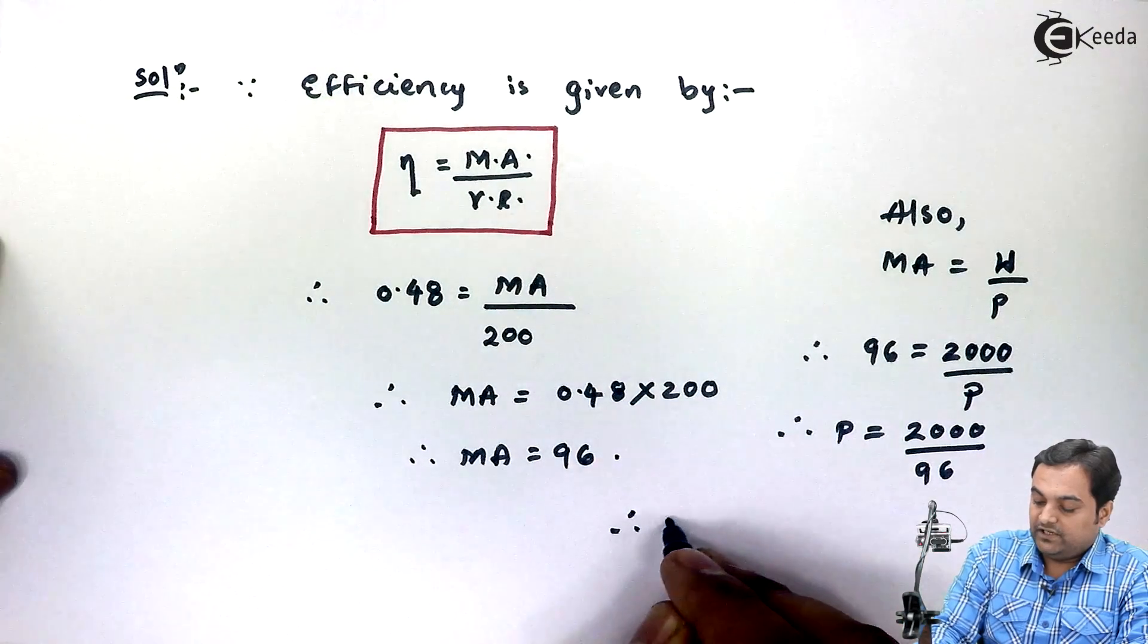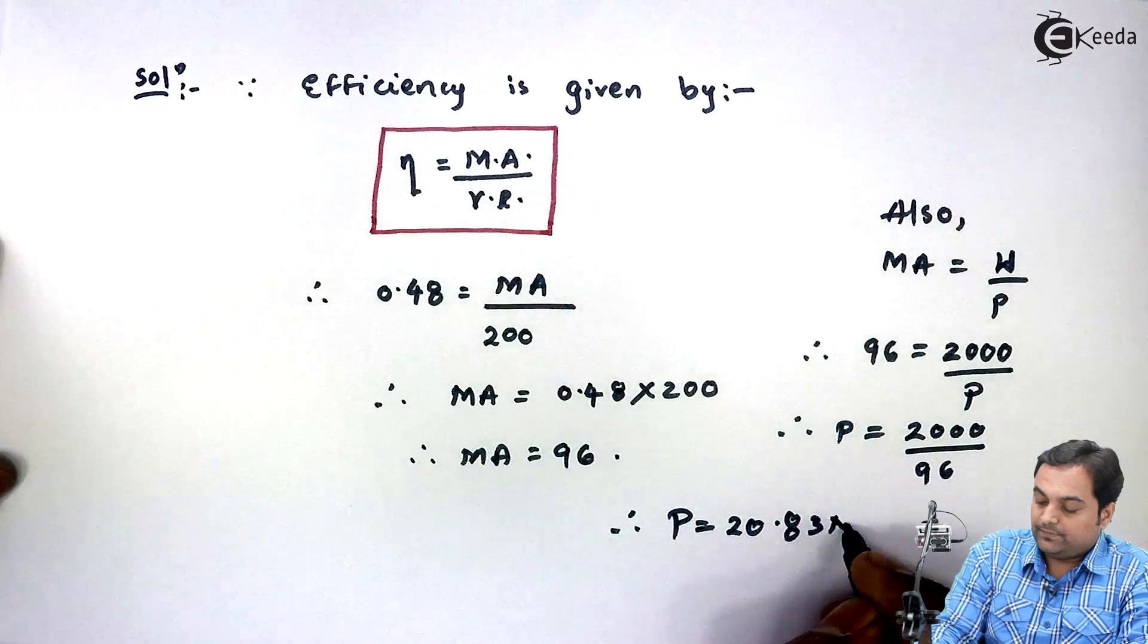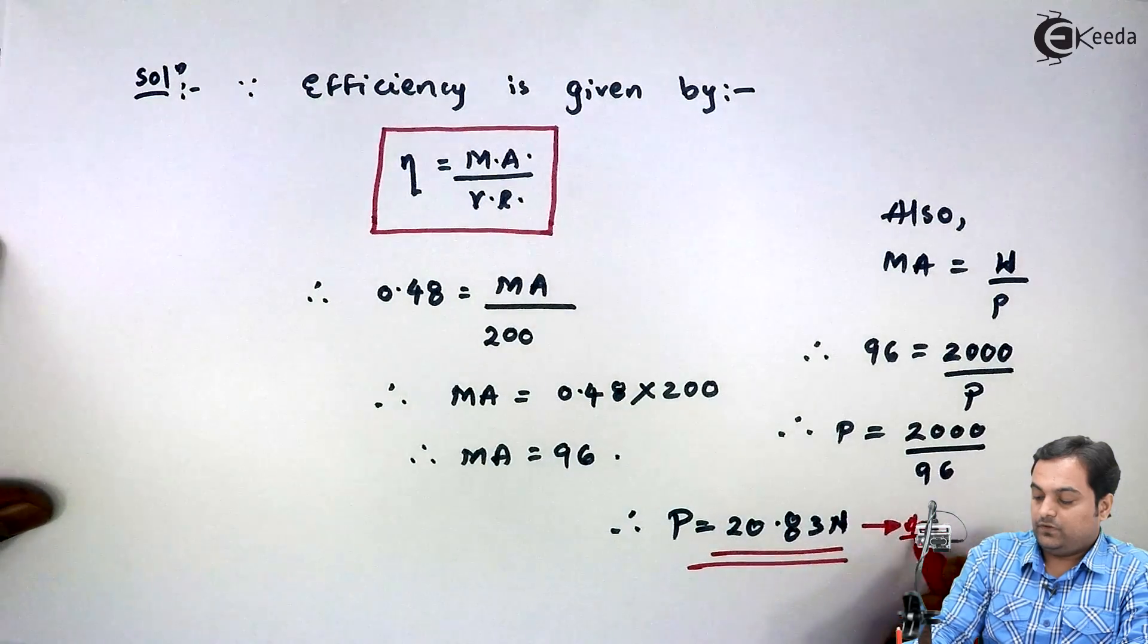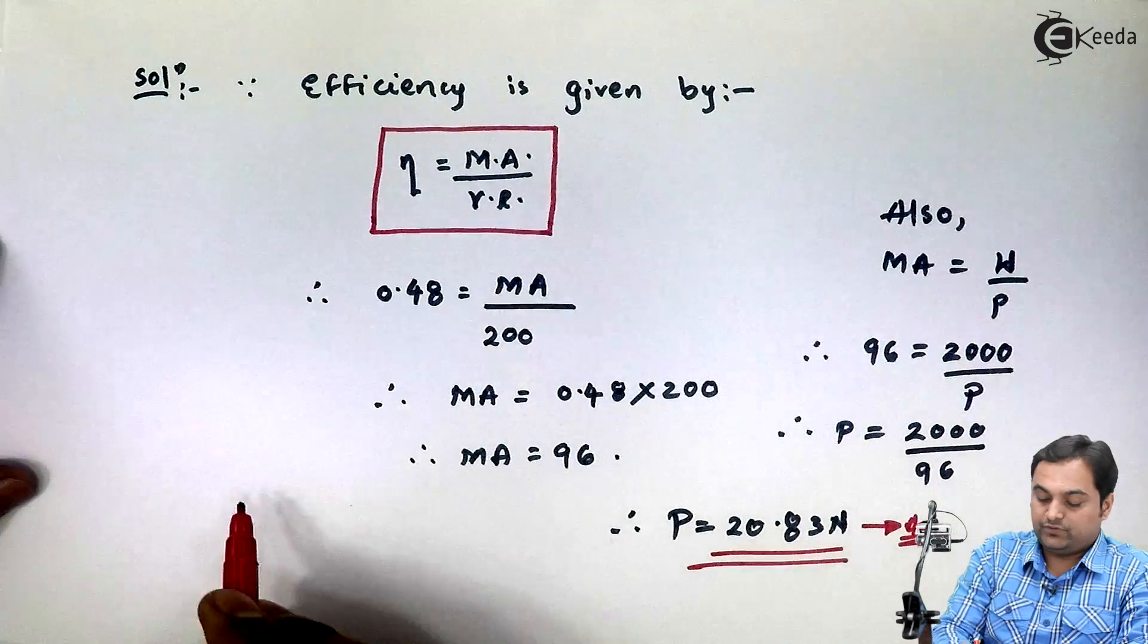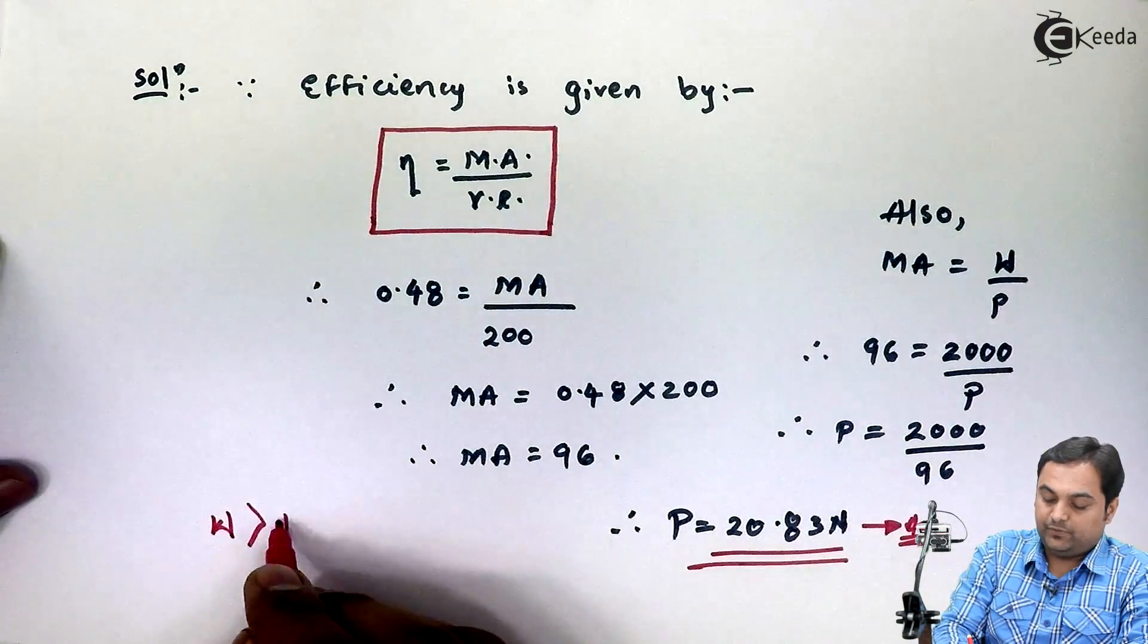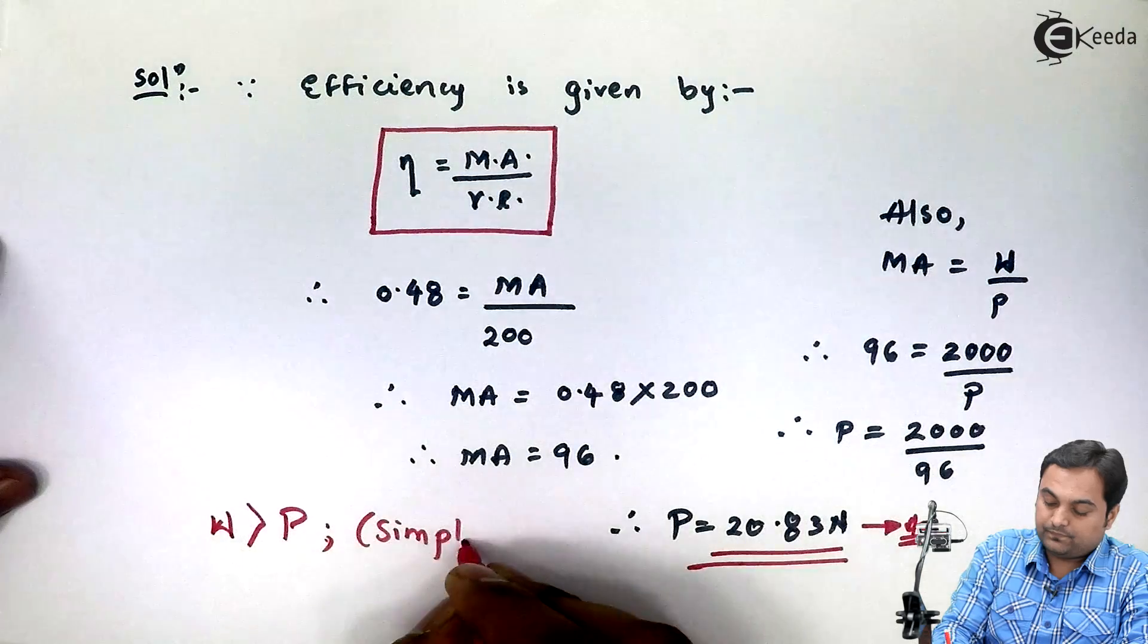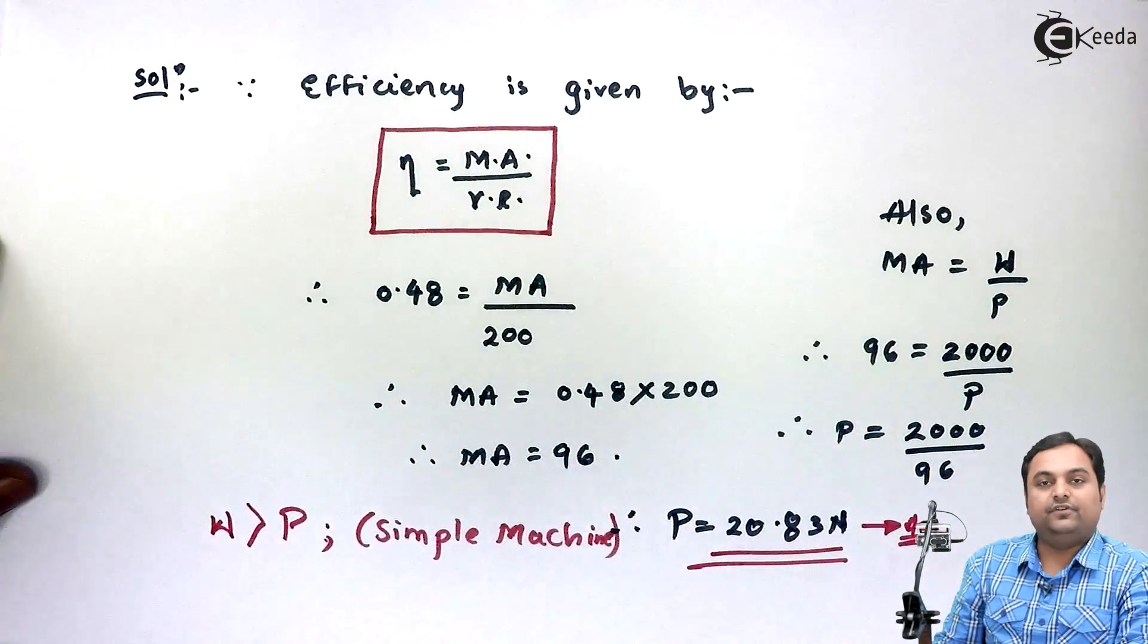So finally, effort comes out to be 20.83 Newtons. This is the answer. As we see, the load is 2000, which is greater than the effort of 20.83, so therefore you can say that it is a simple machine. And with this we complete the problem.